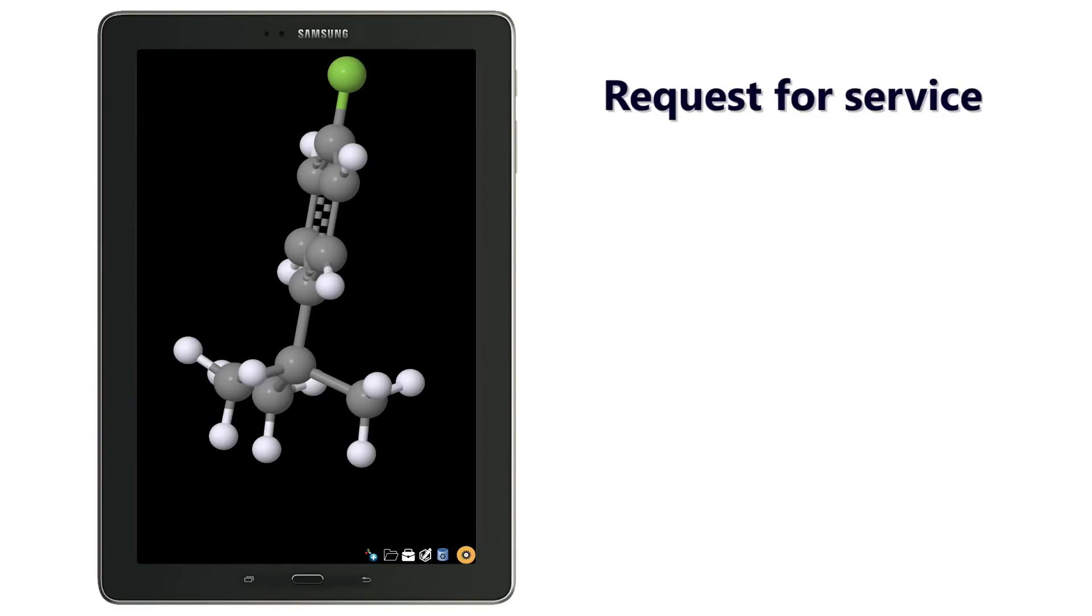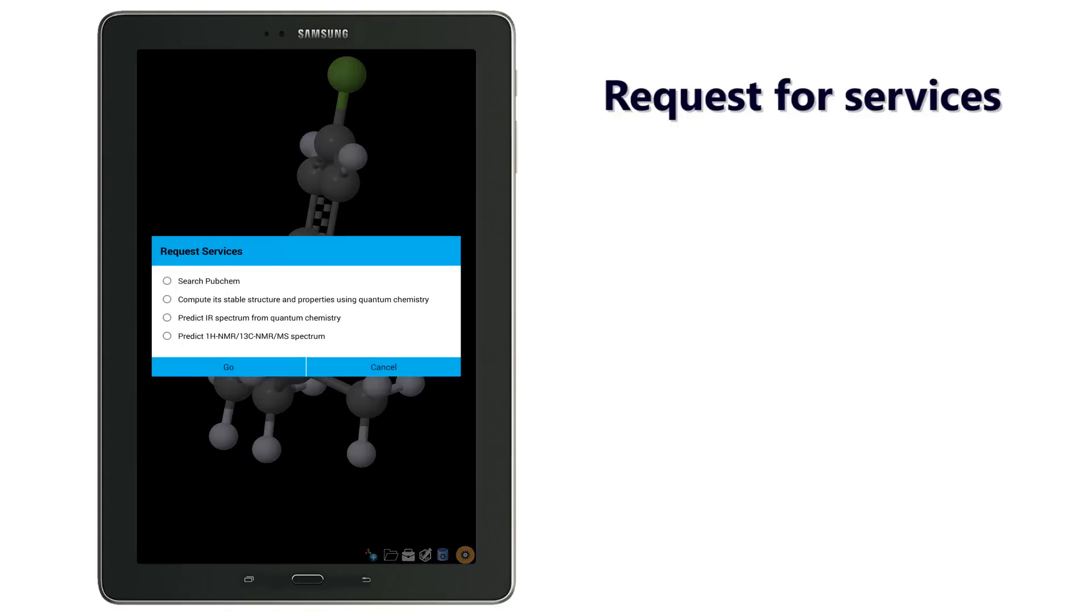After building a molecule of interest, you can request for searching or computing its chemical properties by tapping on the request services button. Here you can request a search information at the PubChem public database or compute the molecule structure and its properties using quantum chemistry.